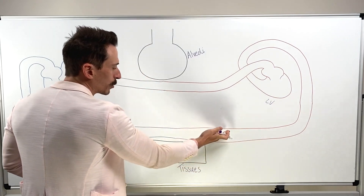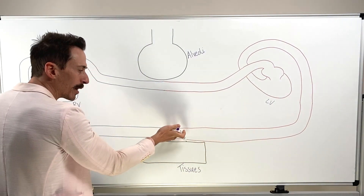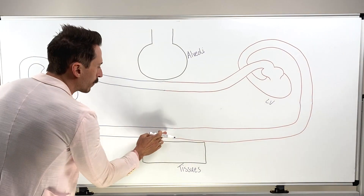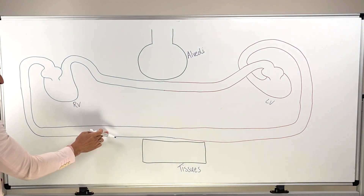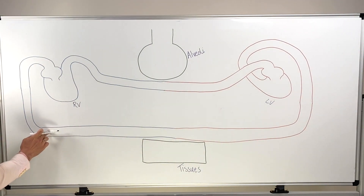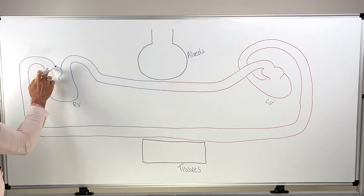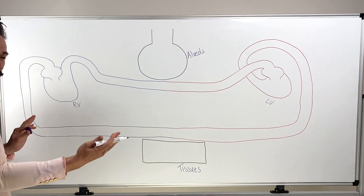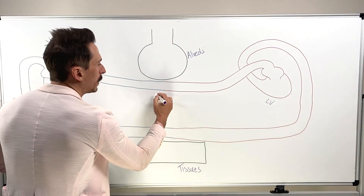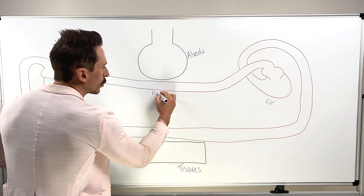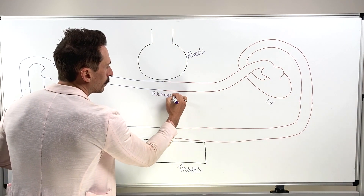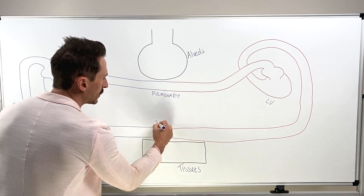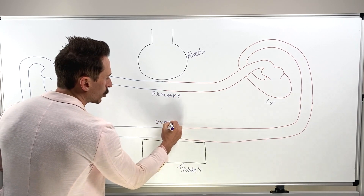The left ventricle will then contract and pump blood out via the aorta that will go to the whole body. Its various branches will ultimately turn into capillaries — gas exchange occurring here. Then we've got the venous system going back to the vena cava, back to the right atrium, to the right ventricle, and the whole process begins again. Simply, what we have here is the pulmonary circulation and here we have the systemic circulation.